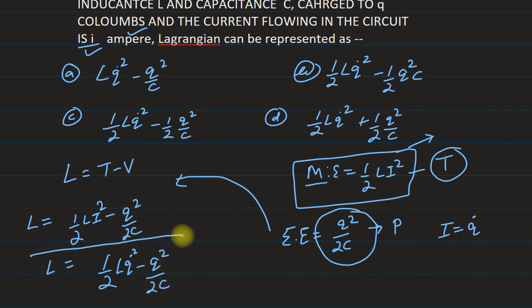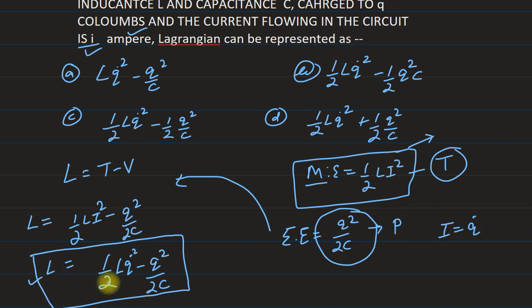So our Lagrangian expression becomes: L = half L q̇ squared minus q squared upon 2C. That is the Lagrangian. This is the representation: L = ½Lq̇² − q²/2C. So option C is the correct answer for this question. Thank you.